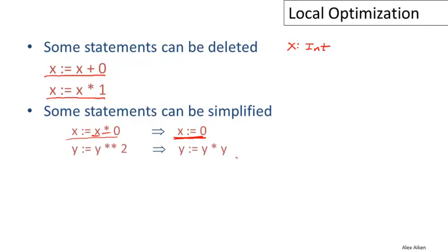Another example: replacing the exponentiation operator — raising a value to the power of two — by an explicit multiply. Here we're computing y squared, and we replace that by y times y. This exponentiation operator is almost certainly not a built-in machine instruction; it will likely become a call to some built-in math library with function call overhead and a general loop. So in the special case where we know the exponent is two, it's much more efficient to replace that call by an explicit multiply.